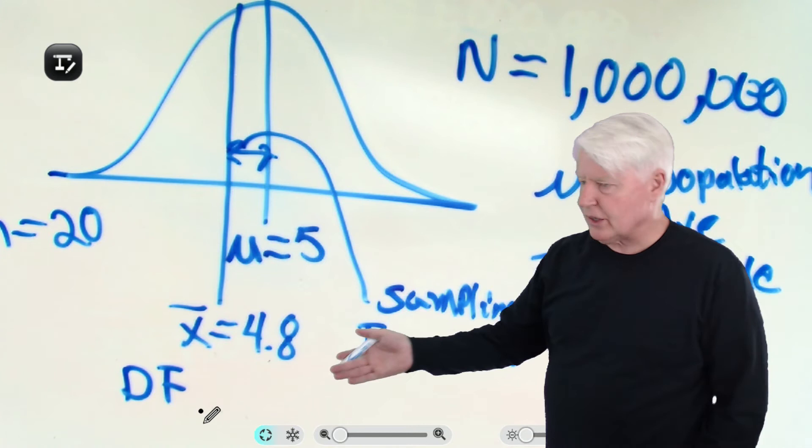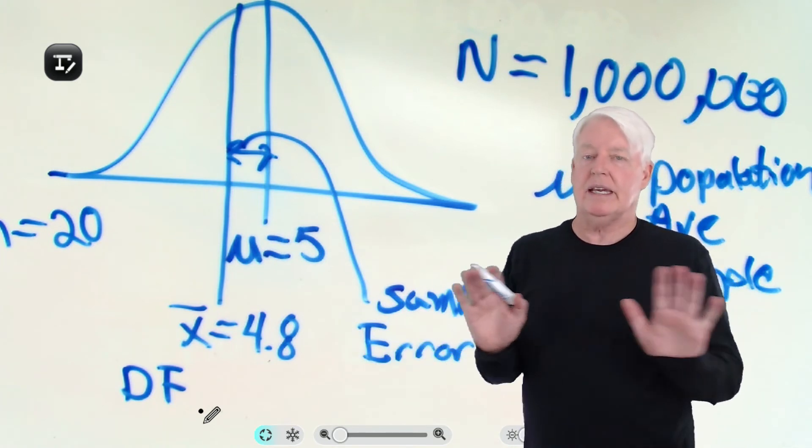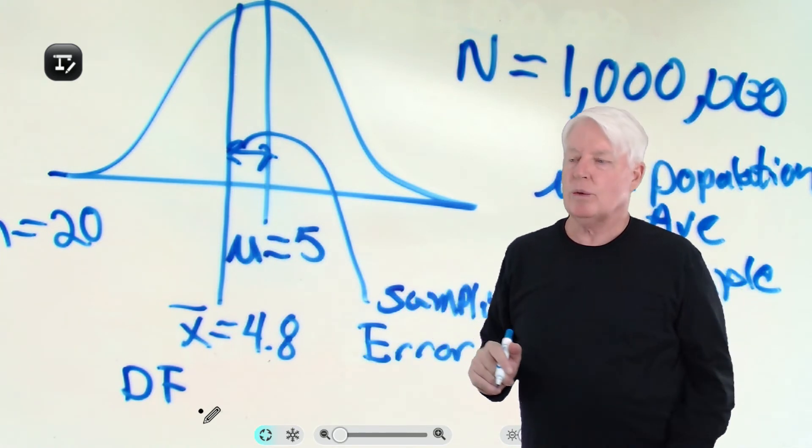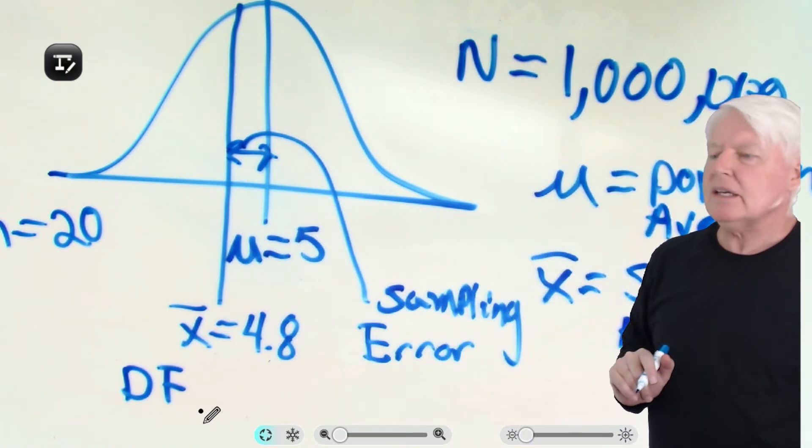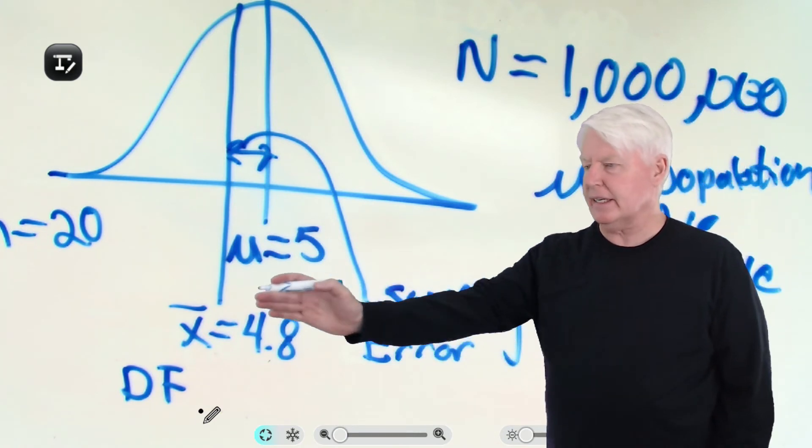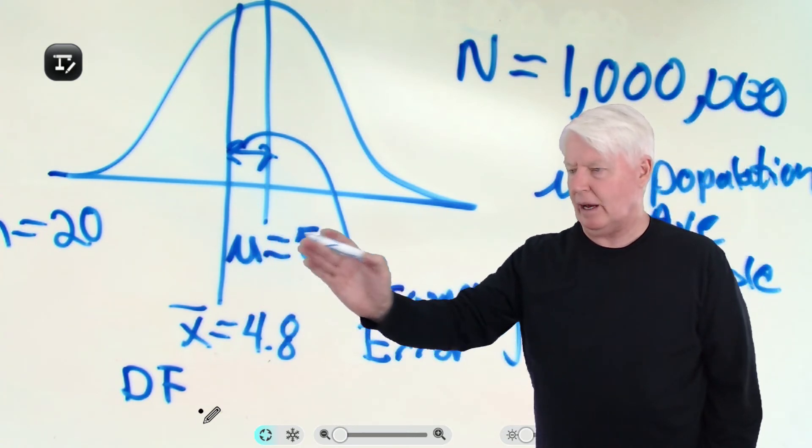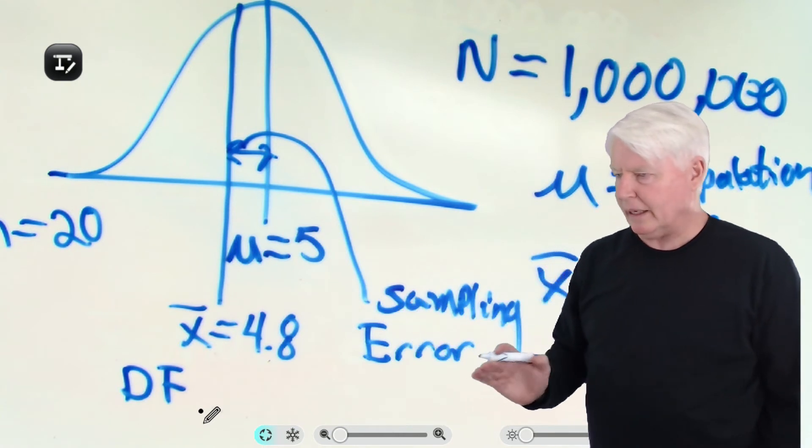If you go to another table, such as the z-table, guess what? It has no degrees of freedom. What does that tell you? It means that table, that z-table, does not take into account sampling error. So again, sampling error is that distance from your estimate to the true value due to sampling. We call it sampling error.